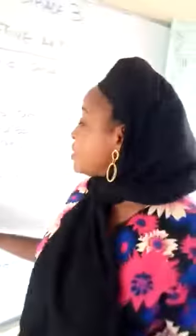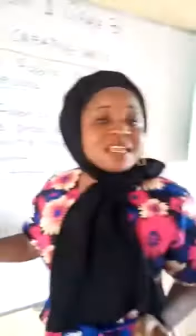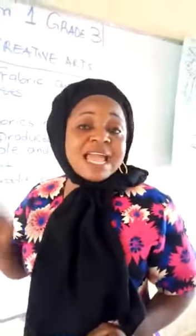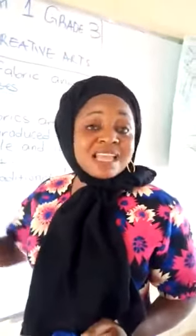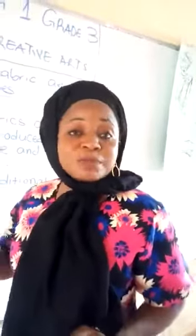One, we have adire. Adire is also known as tie and dye — that is the English name. Adire is a cloth produced by the Yoruba people. This is an example of adire — this is a tie and dye cloth.